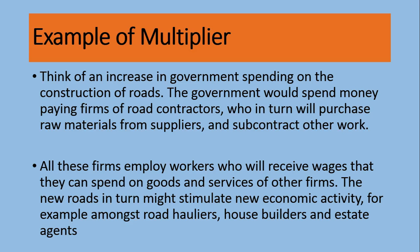The government will transfer this 100 million pounds to a contractor's account. The income of the contractor has been increased by 100 million pounds. Remember: the expenditure of one person is the income of another person. Now the contractor will hire labor and pay them for construction of the roads, hire machines, and hire other small firms to make these roads.